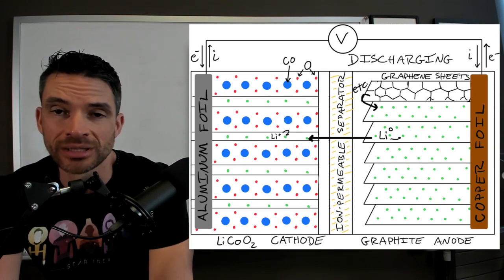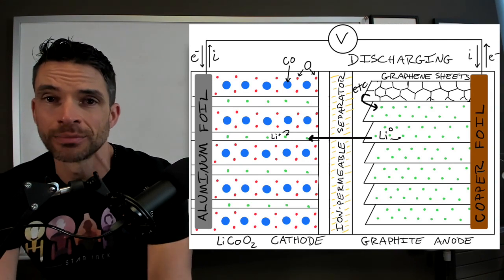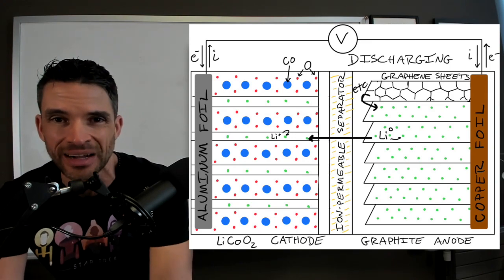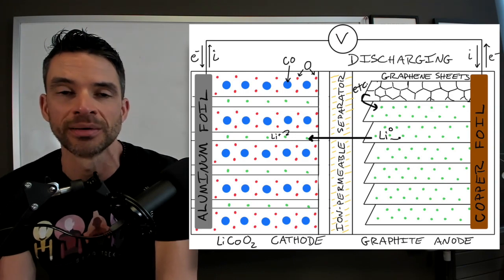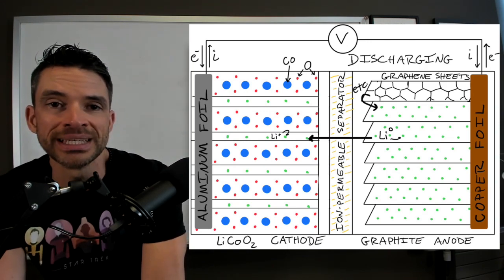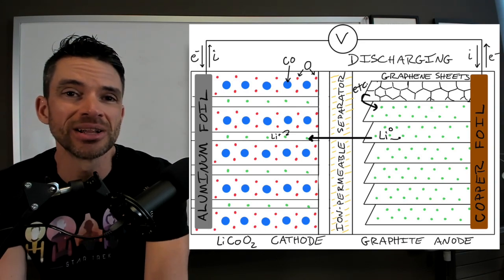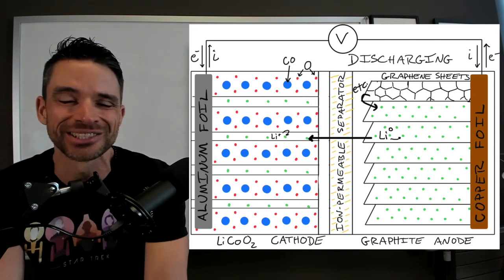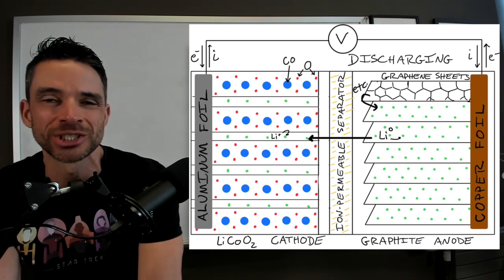And then upon discharge, the lithium zero gives up an electron, becomes lithium plus, and then it slides over this ion permeable separator into what's called an intercalation compound that's used in the cathode. And the typical intercalation compound is lithium cobalt oxide.